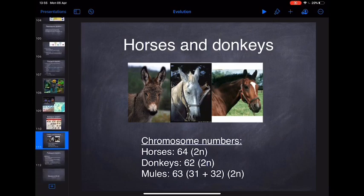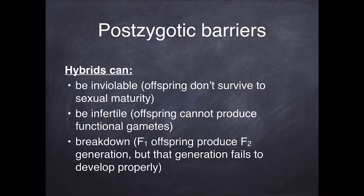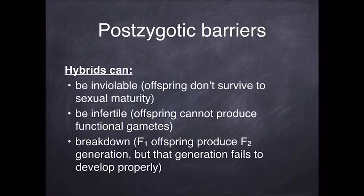Now when we talk about post-zygotic barriers, there are different types. One is inviability — you produce an embryo, carry it to term, it is born, but then it doesn't reach sexual maturity. For humans that means dying before puberty; for animals it depends on when sexual maturity is reached; for trees it might be 5–10 years; for annuals, a few weeks; for bacteria, a couple of hours. So the hybrid offspring is born but dies before it can reproduce.